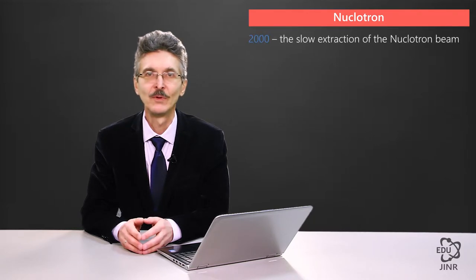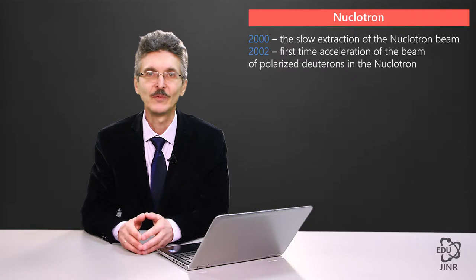The first years of experiments at the nucleotron were carried out only on an internal target, while the runs of the synchrophasotron and the nucleotron were conducted in turn. In the year 2000, the slow beam extraction from the nucleotron was realized, followed by the first extraction of the polarized deuteron beam from the nucleotron, which was achieved in 2002.